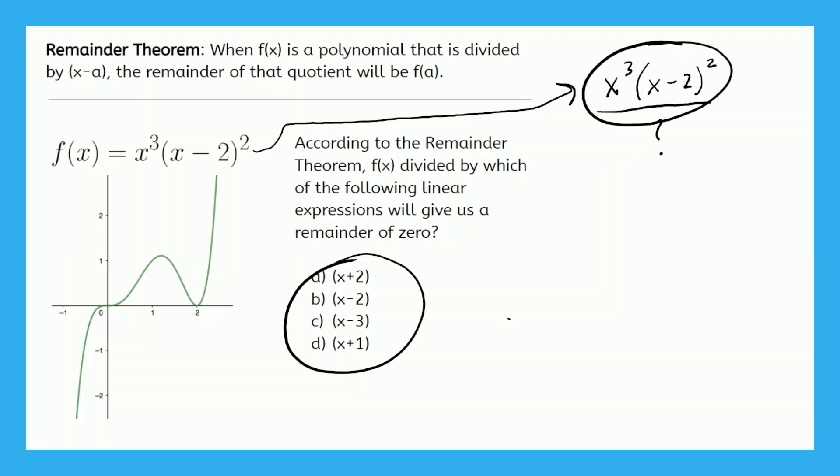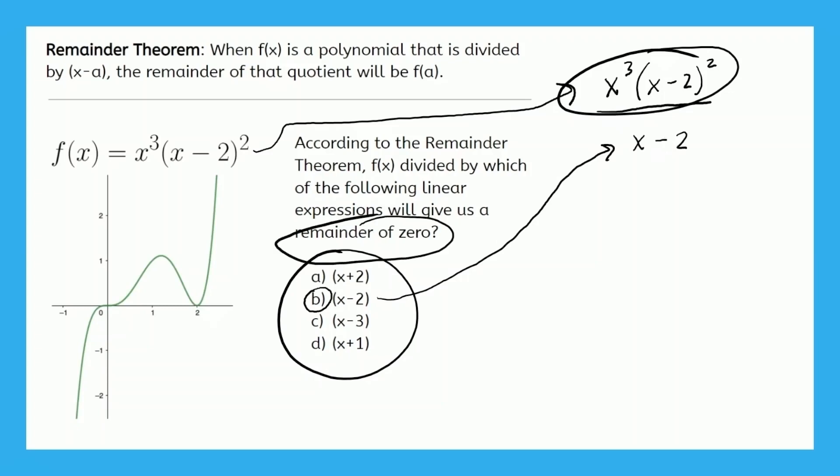Obviously, only b can be the answer. (x - 2) is a factor of this expression up above. So of all these options, because (x - 2) is the only factor of the numerator, we know that (x - 2) is the answer. That is, that expression (x - 2) will give us a remainder of 0.